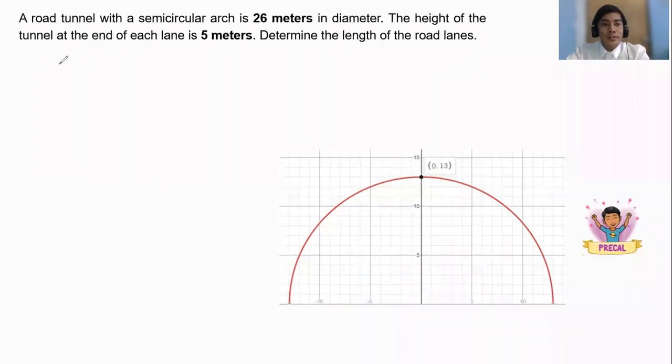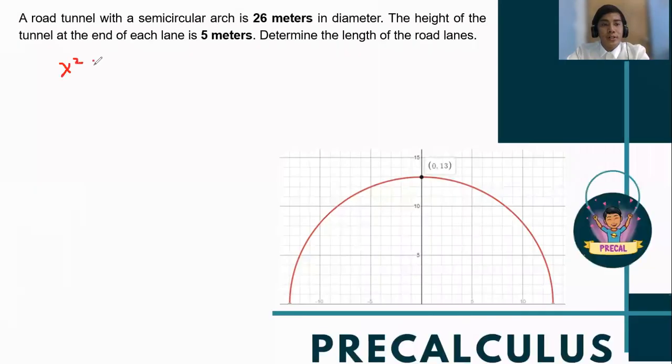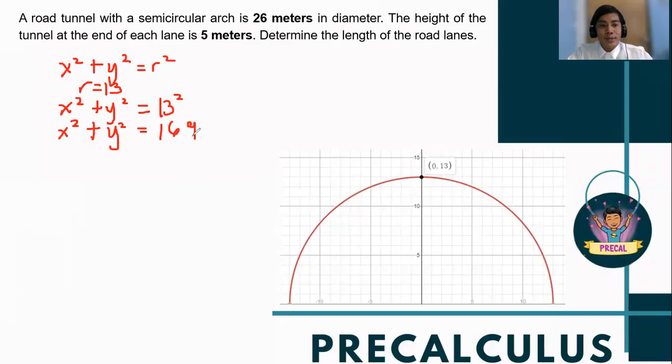So again, we use the standard equation of circle centered at (0,0). So we have x² + y² = r². Since our r is 13, given the diameter 26, we'll have x² + y² = 13². Evaluate 13 squared. We will get x² + y² = 169.